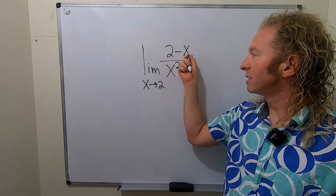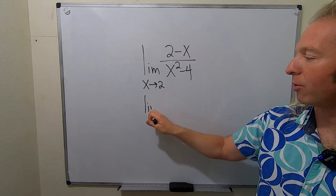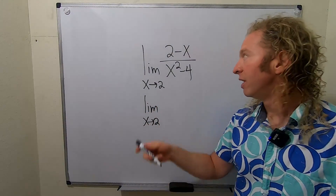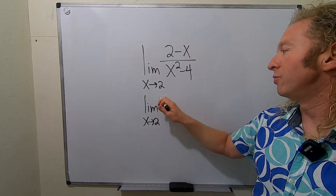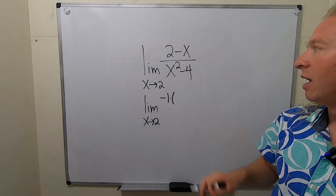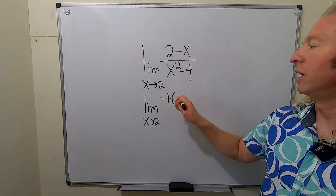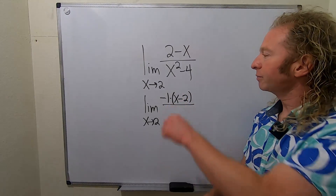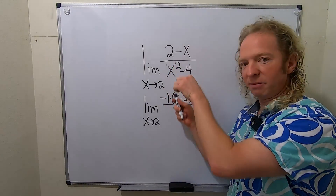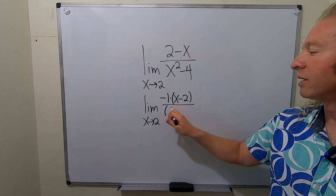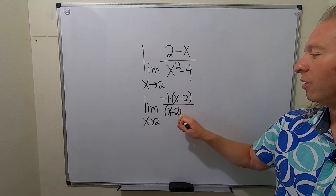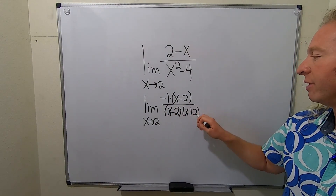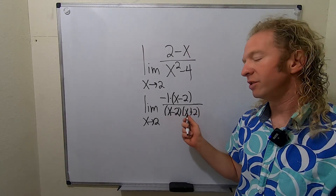However, the numerator is 2 minus x. So the trick in this problem — the technique you want to use — is to factor out a negative 1 in the numerator. When you do that, you get negative 1 times (x minus 2) over (x minus 2)(x plus 2) — that's the difference of squares.